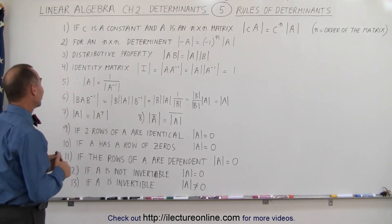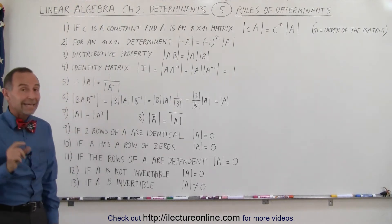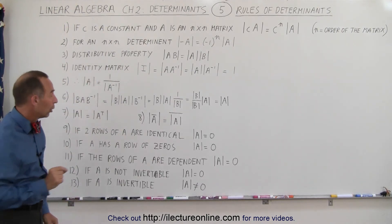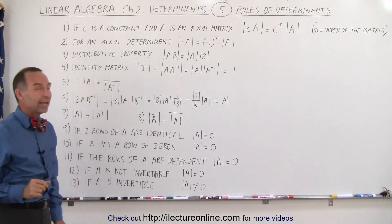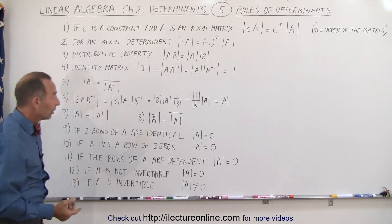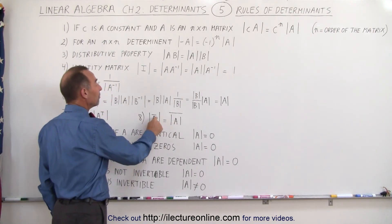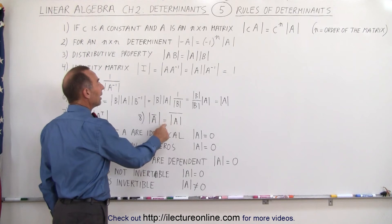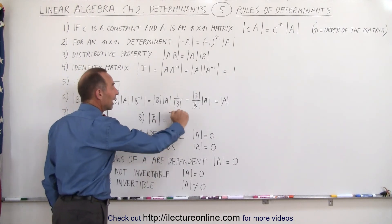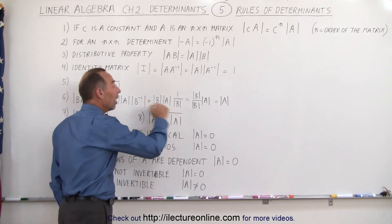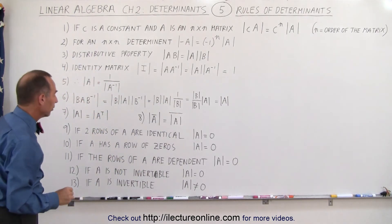Rule seven says that the determinant of matrix A is equal to the determinant of the transpose of matrix A. Rule eight says that the determinant of the complex conjugate of matrix A is equal to the complex conjugate of the determinant of matrix A, and those two should be equal to one another.